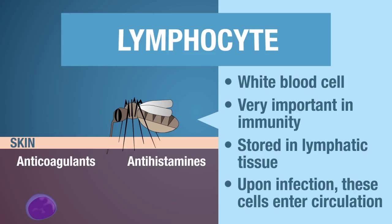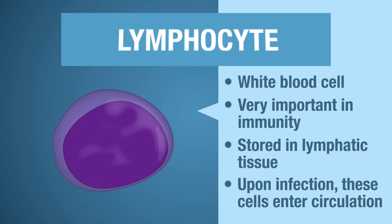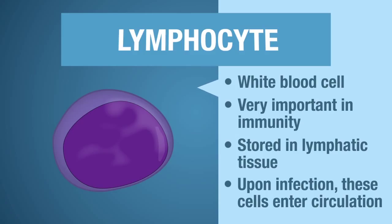Your body has been invaded. Now the lymphocytes have a job to do. Their goal in life is to kill or assist in killing that invader. You will learn more about how these lymphocytes do their job when we discuss the immune system.